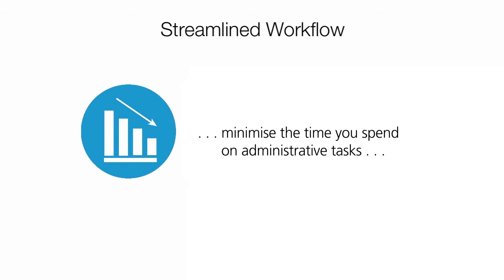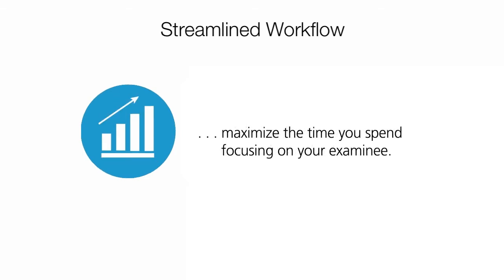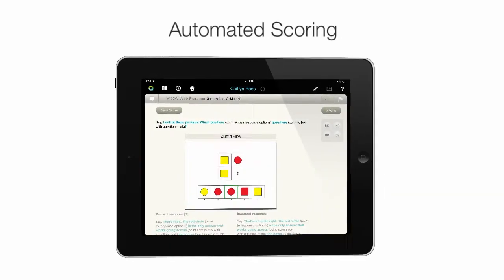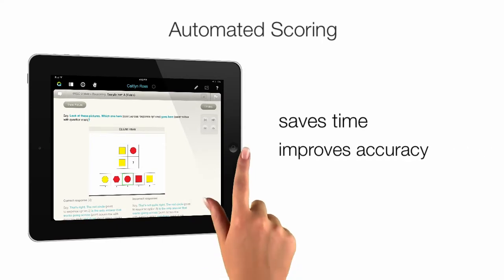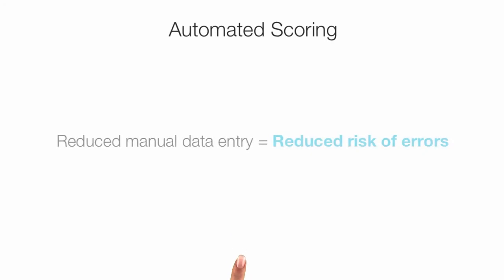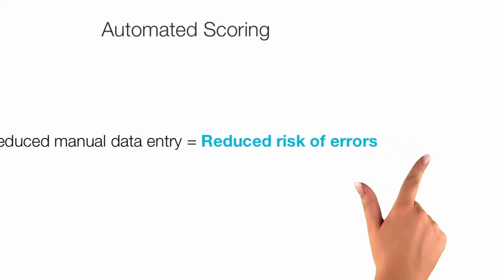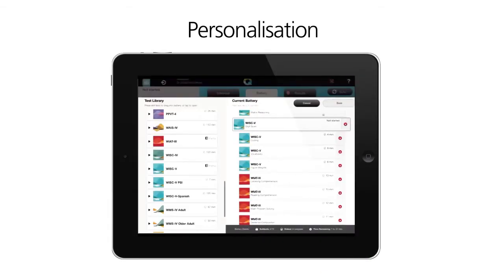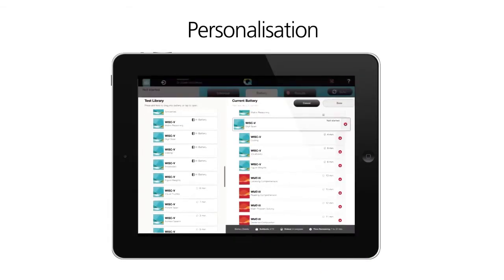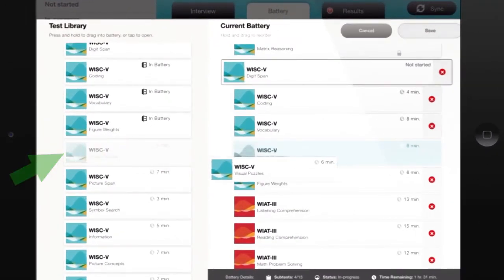With Q Interactive, the materials you are accustomed to managing are consolidated into a web and iPad-based system. With less stuff to juggle, you minimize the time you spend on administrative tasks and maximize the time you spend focusing on your examinee. With automated scoring, Q Interactive not only saves you time but improves accuracy. Reduced manual data entry equals a reduced risk of errors.